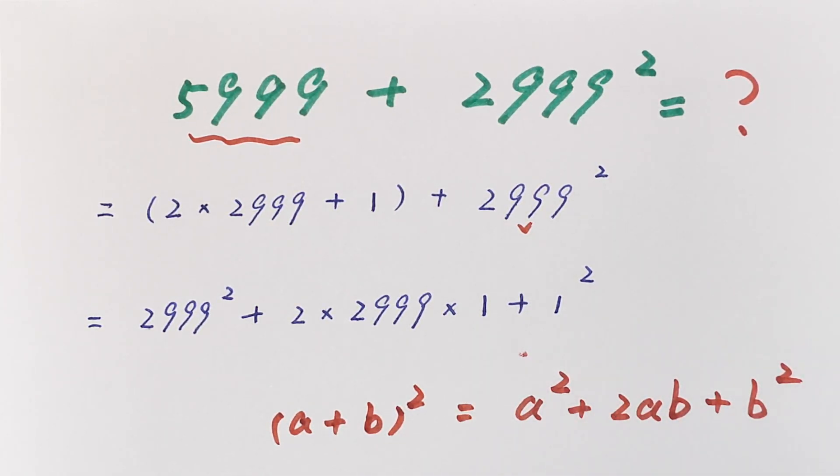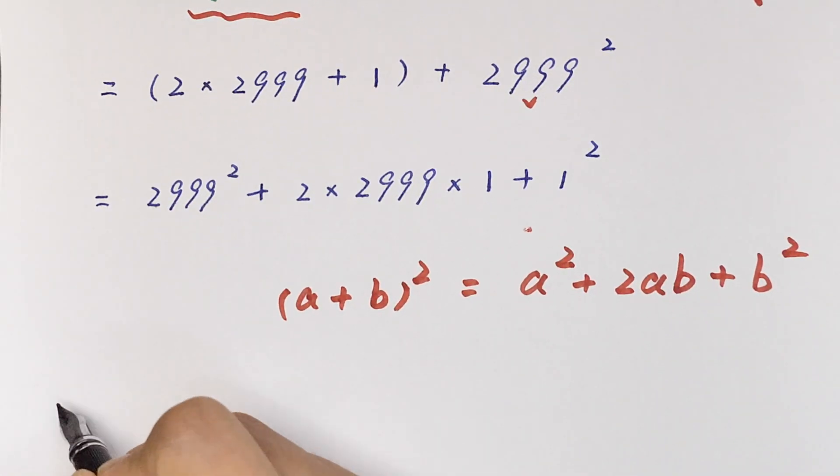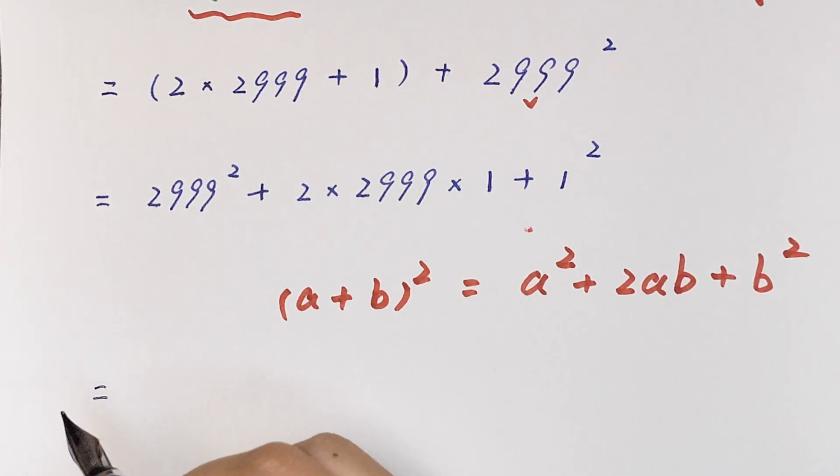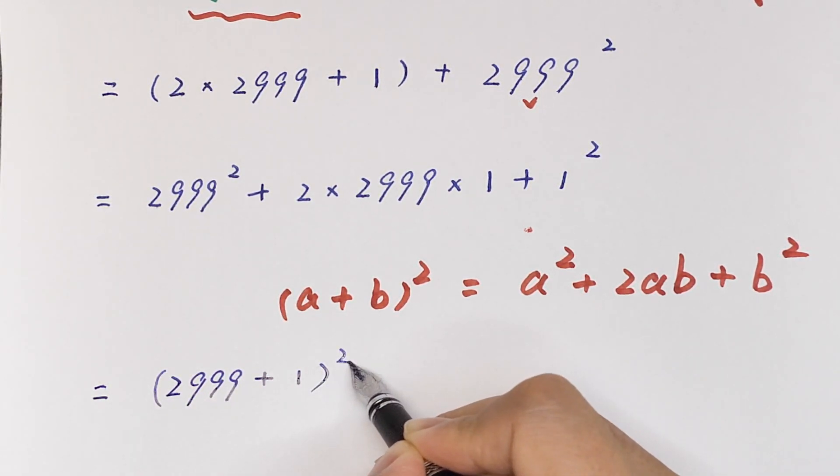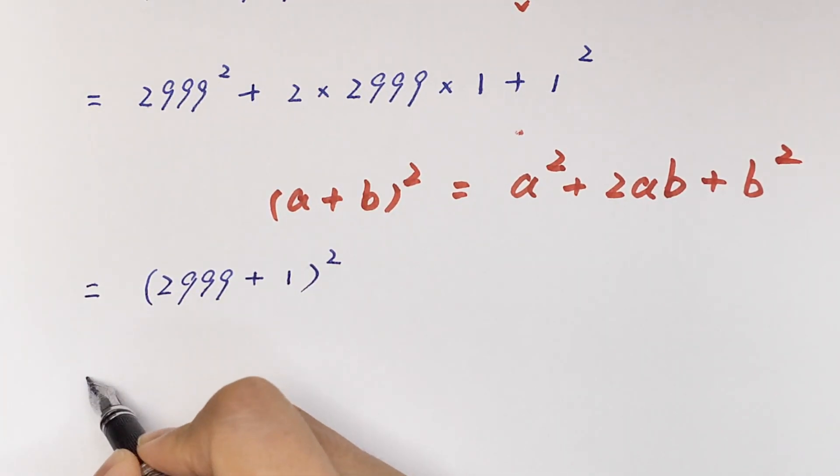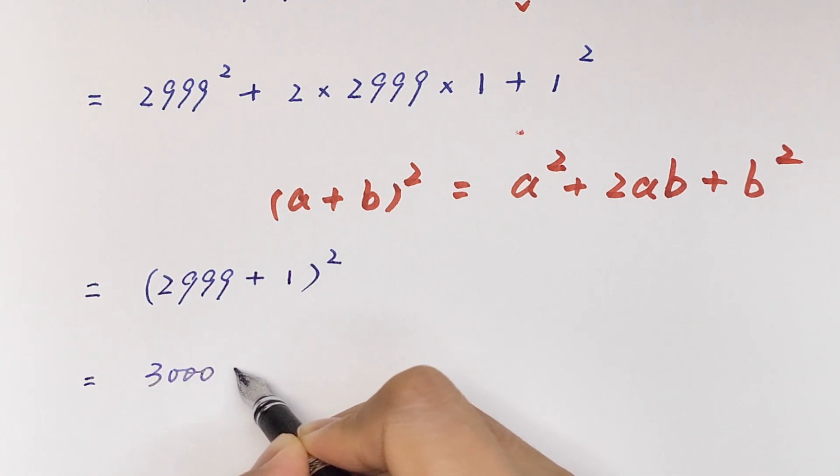Ta-da! Okay, let's move on. It is equal to 2999 plus 1 bracket square. It will be equal to 3000 square.